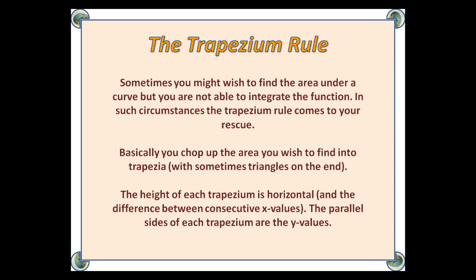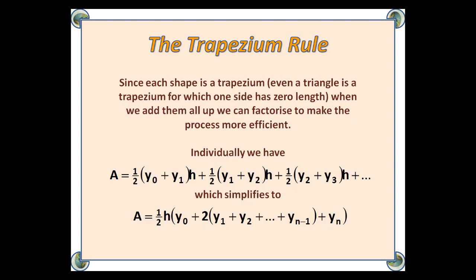Basically, you chop up the area you wish to find into trapezia, with sometimes triangles at the end. The height of each trapezium is horizontal, and is the difference between consecutive x values. The parallel sides of each trapezium are the y values. Since each shape is a trapezium — even a triangle is a trapezium for which one side has zero length — when we add them all up, we can factorise to make the process more efficient.